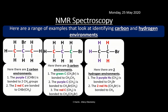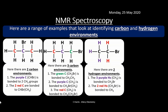We can also apply this to hydrogen (proton NMR). The two hydrogens on the CH₂ next to bromine are in the same environment — both bonded to a carbon that's bonded to bromine and CH₃. The three hydrogens on the CH₃ are in a different environment — bonded to a carbon that's bonded to CH₂Br. So we have two hydrogen environments: one with two hydrogens and one with three.